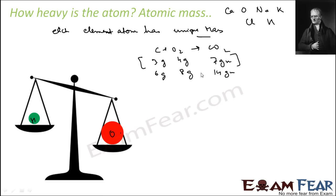With this, we can actually find relative atomic mass. We are talking about the 1850s era, where finding actual atomic mass was very difficult — in fact, impossible. But it was possible to find the relative atomic mass. For example, 3g of carbon reacts with 4g of oxygen to give carbon dioxide.